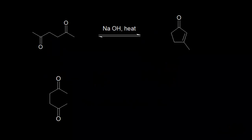Let's see how to approach an intramolecular aldol condensation. Over here on the left we have 2,5-hexanedione, and if we add sodium hydroxide and we heat things up, we would form this compound over here on the right — we would actually form a ring.